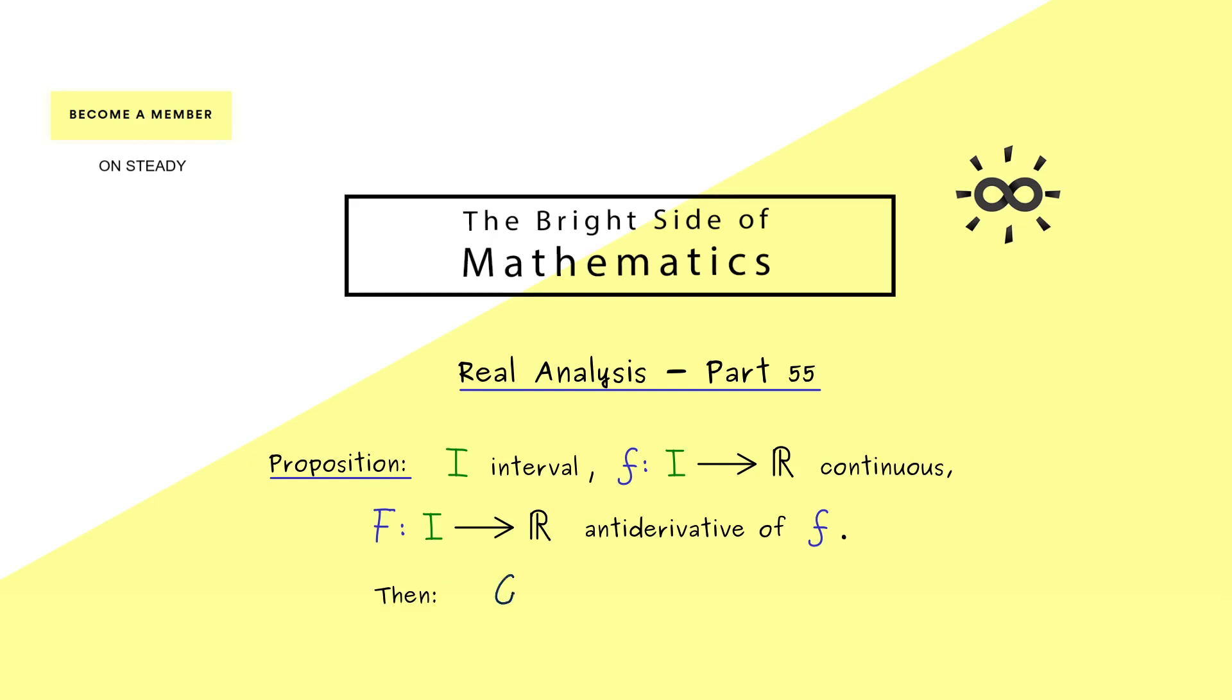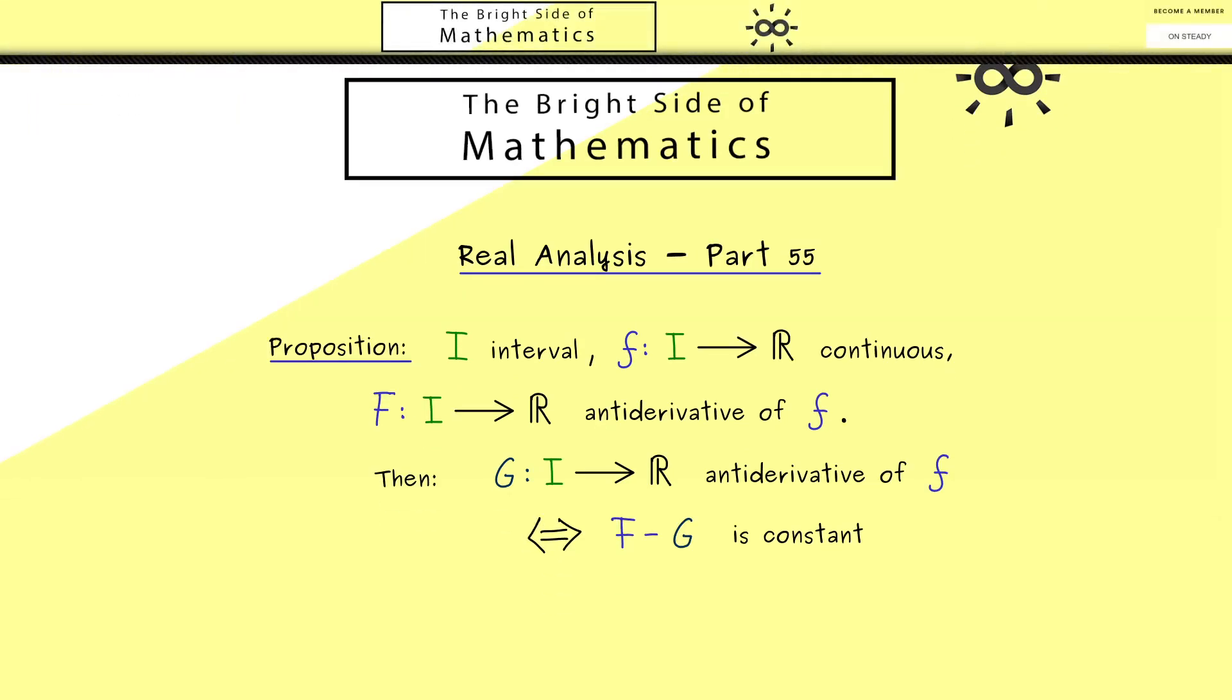Now this function capital G could be another antiderivative of f. However, it turns out this is the case if and only if the function given by F minus G is a constant function. In other words, each antiderivative of f is given by capital F plus a constant. Therefore you can say if we ignore such constant terms, the antiderivative is indeed uniquely given. So you see this proposition here is a nice result we can use, and therefore we should talk about the proof.